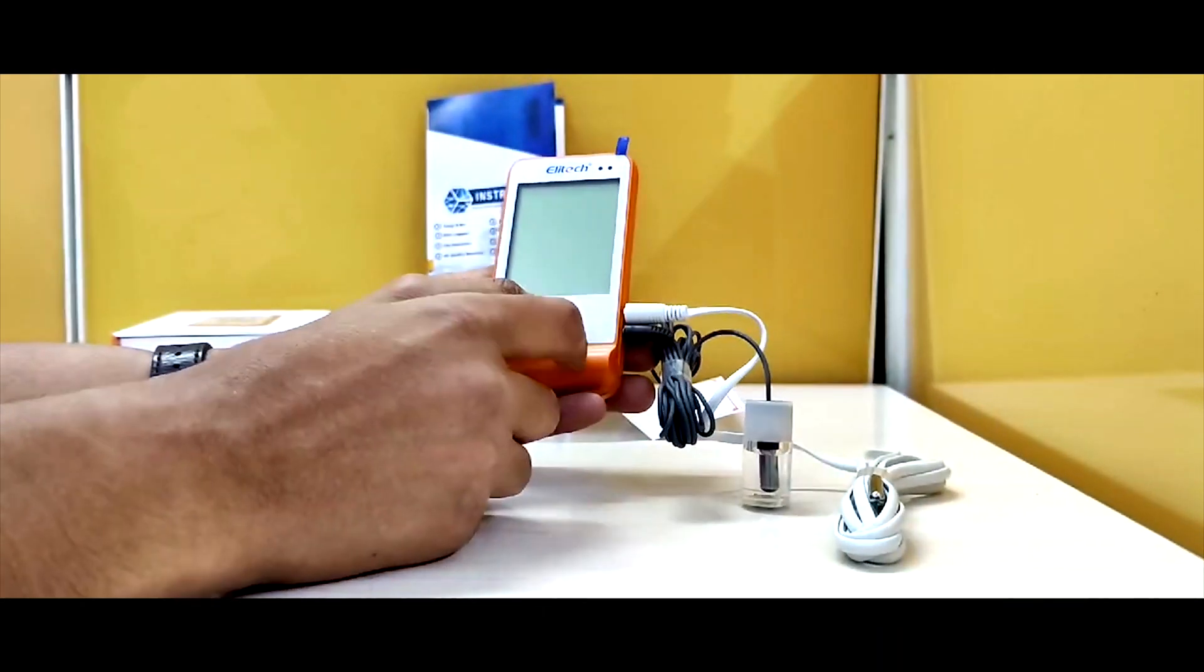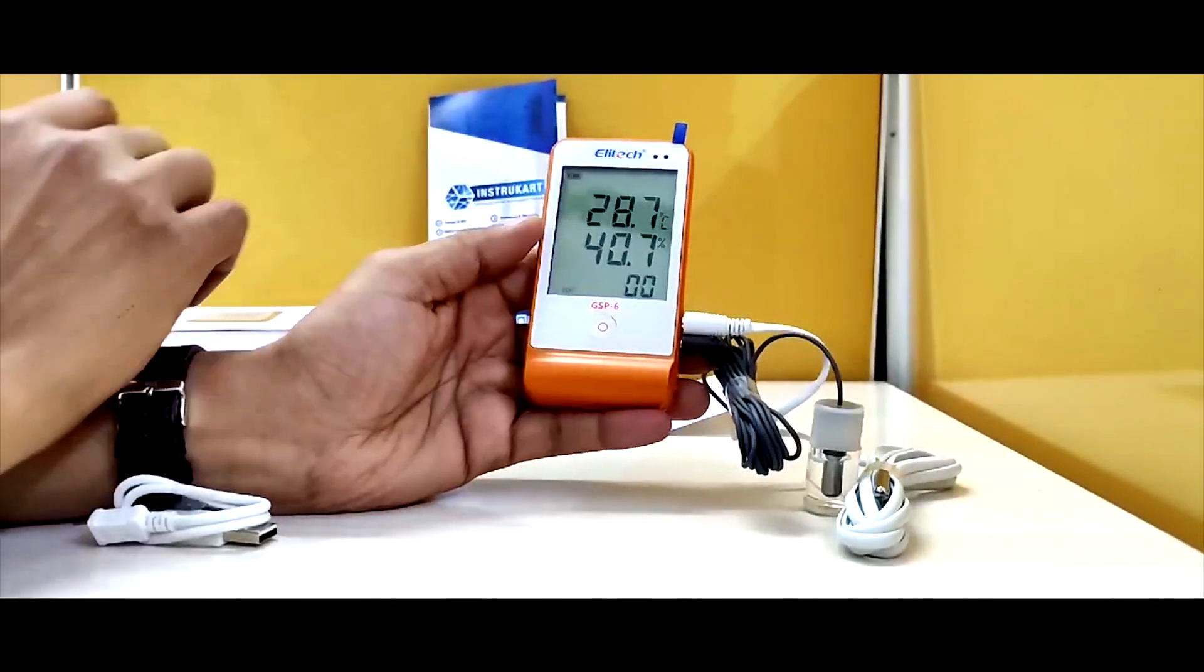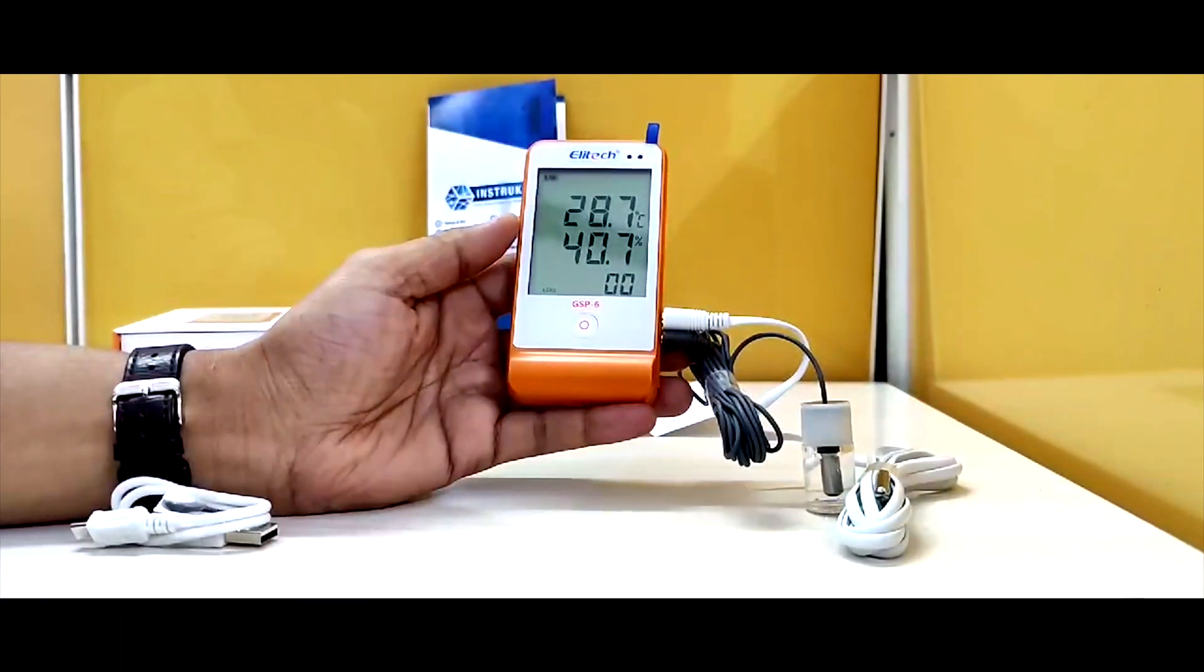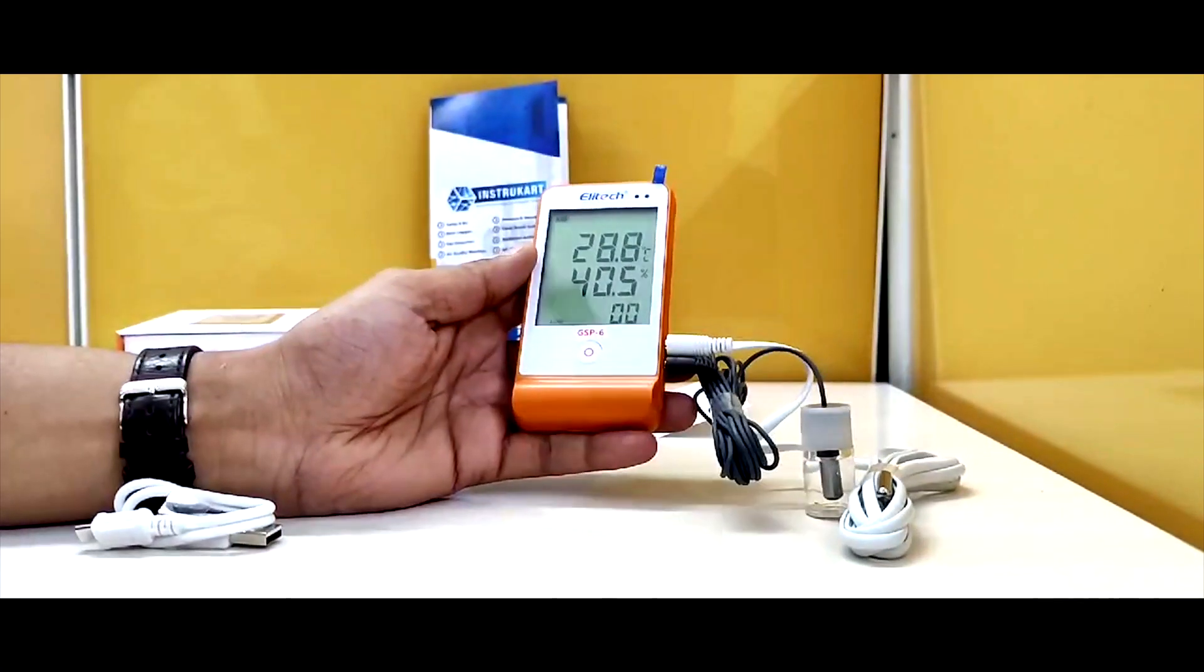Otherwise in GSP6, the normal probe comes for the temperature reading. Now if you can see, this has a very large probe. It has a 2.8 inch LCD probe which shows the temperature, humidity, and the logs.